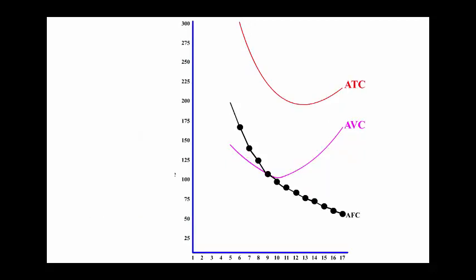Notice on this graph we have the average fixed cost, the average variable cost, and the average total cost. We can figure out the average fixed cost if we have the average total cost and the average variable cost, because the average fixed cost is equal to the average total cost minus the average variable cost.